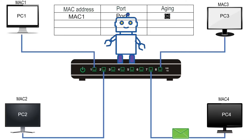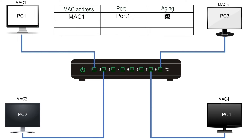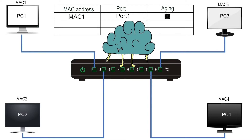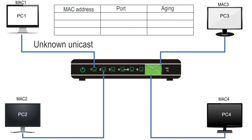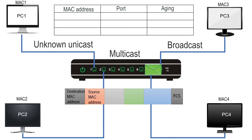A switch uses a relatively simple concept to forward a frame. It finds the destination MAC address of the incoming frame in the CAM table. If the table has an entry, it forwards the frame from the port mentioned in that entry. If the table does not have an entry for the destination MAC address, it forwards the frame from all ports except the port on which it arrived. This process is called frame flooding. A switch floods a frame if it has an unknown unicast, multicast, or broadcast address in the destination field.